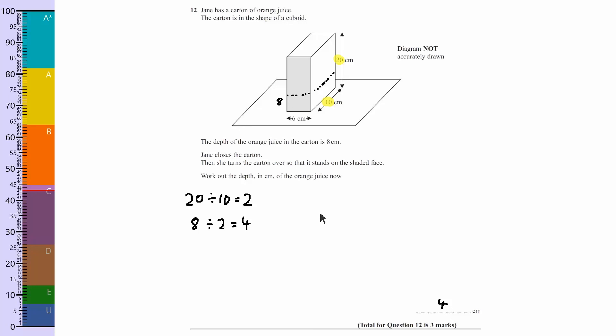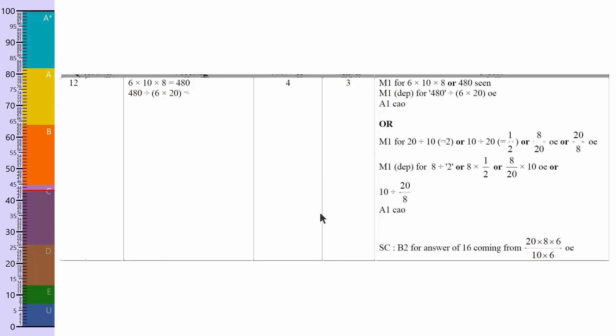Let's have a look at the mark scheme. If you have a look at here, this is basically what I've done, is just to notice that it's halved, therefore I just halve the 8, which gives me 4. So if you write down that way and got the answer of 4, then you'd get full marks.